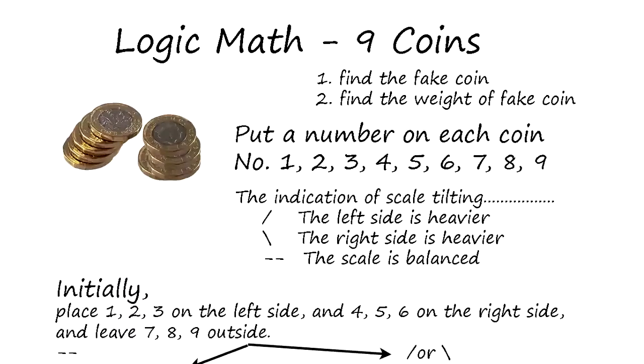Logic math nine coin problem. We have nine coins and you have to find one fake coin. The only thing we know about the fake coin is the weight is different, that's all we know. The strategy here is we put a number on each coin.